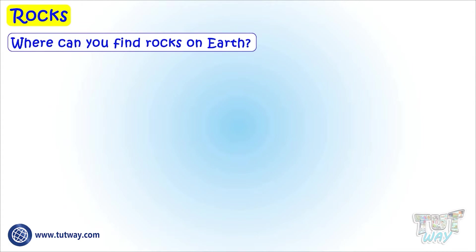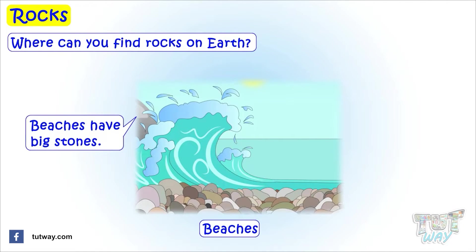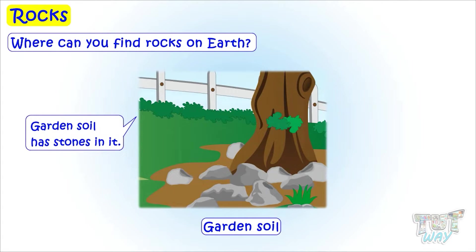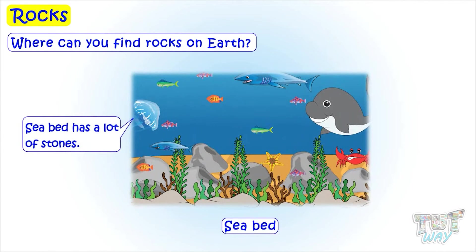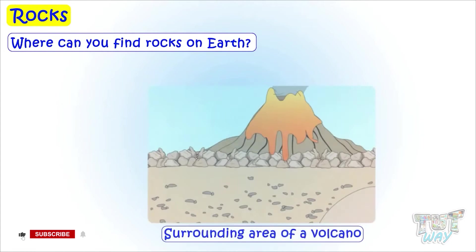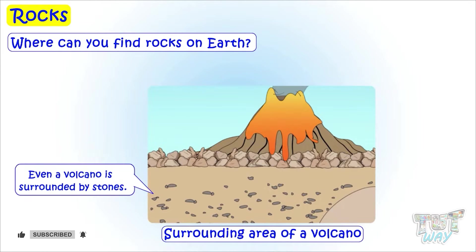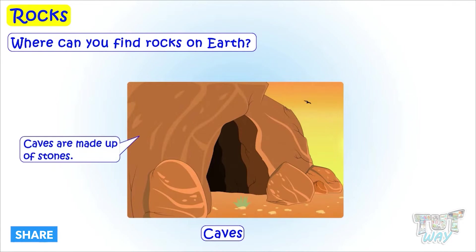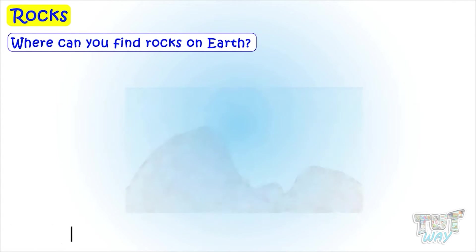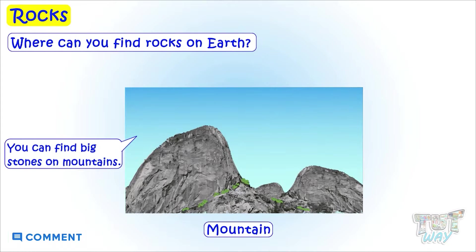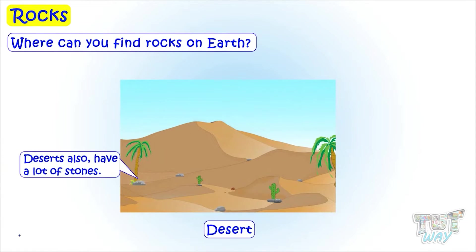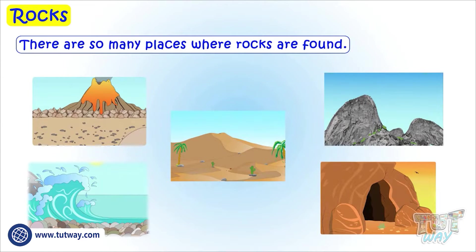Where can you find rocks on Earth? You will find rocks on most of the places on Earth. Here are a few examples. Beaches have big stones. Garden soil has stones in it. Seabed has a lot of stones. The surrounding area of a volcano has stones. Caves are made up of stones. You can find big stones on mountains. Deserts also have a lot of stones. So there are just so many places where you can find rocks.